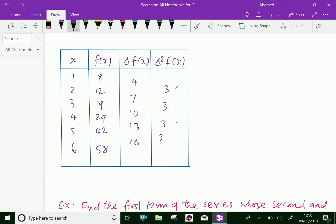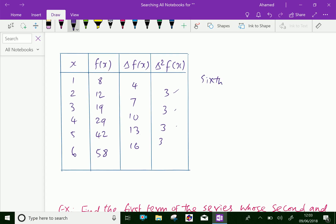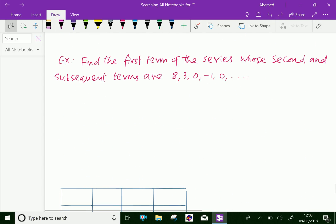So we got the f(x) value of 6, that is the sixth value of the unknown quantity. Therefore, the sixth value of the series is 58. Let us do one more example.